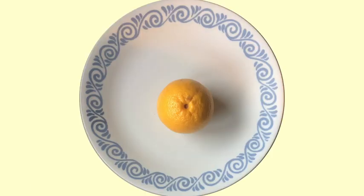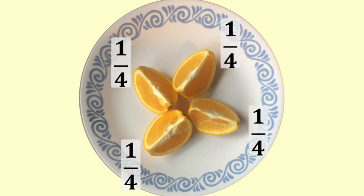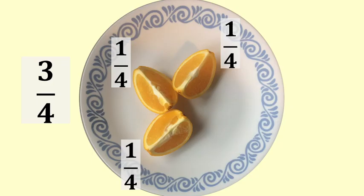Here is one orange. This orange has been cut into four pieces. Each piece is called a quarter or a fourth. One whole orange is made up of four quarters. If I eat one piece we have three quarters of an orange left.